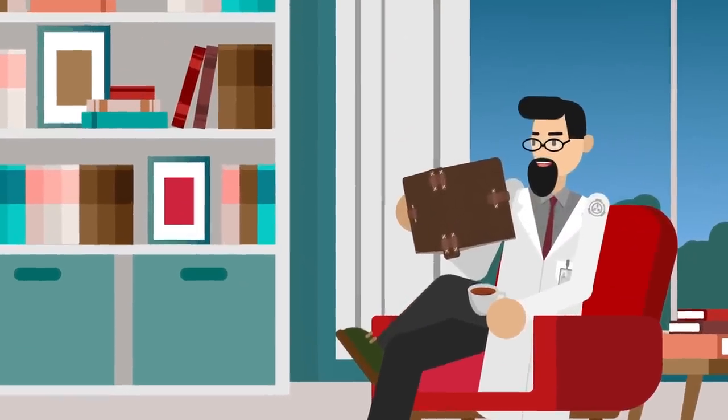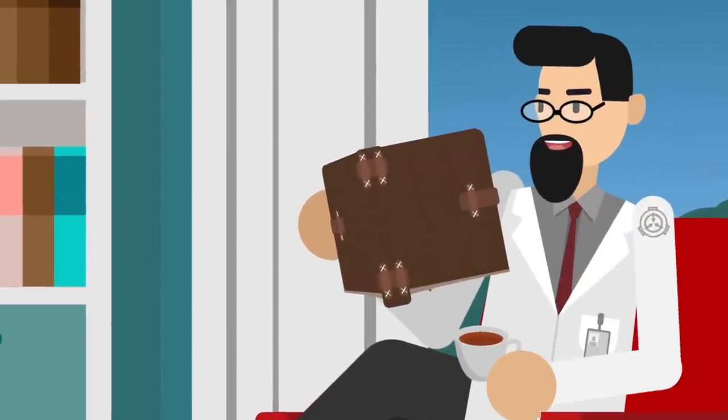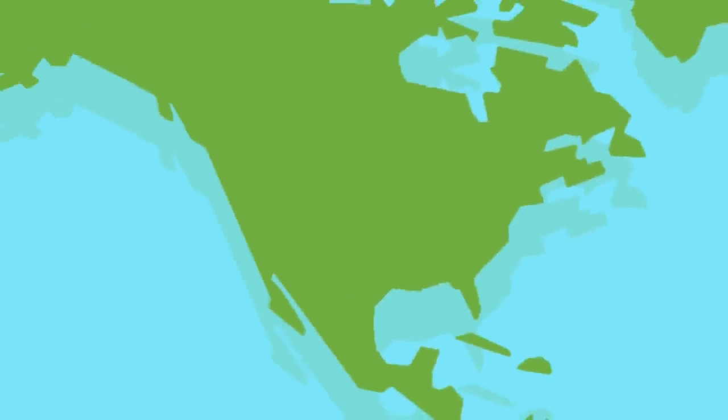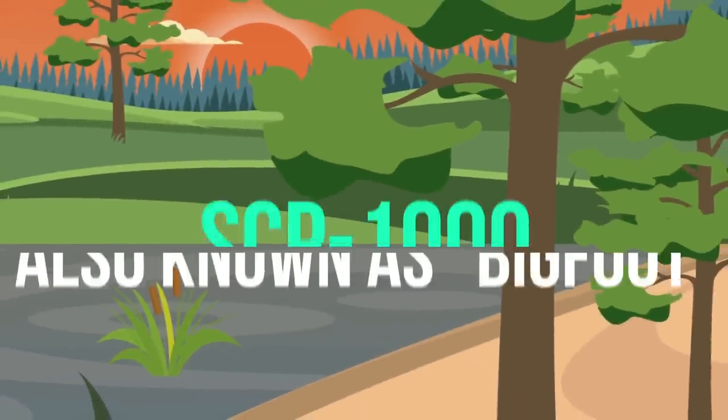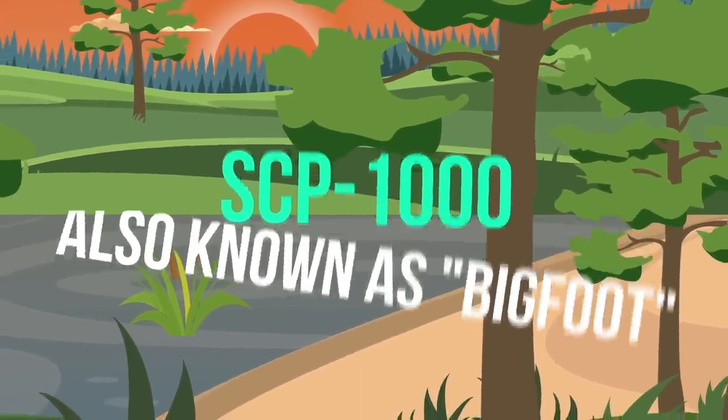Most interestingly of all, all of these journals have been dated to the appropriate time period of the events described by Foundation scientists. While his stories are too numerous to all be shared here, there's one that perfectly sums them all up. Lord Blackwood's account of a possible encounter with SCP-1000, also known as Bigfoot, in Seattle during the mid-1800s.